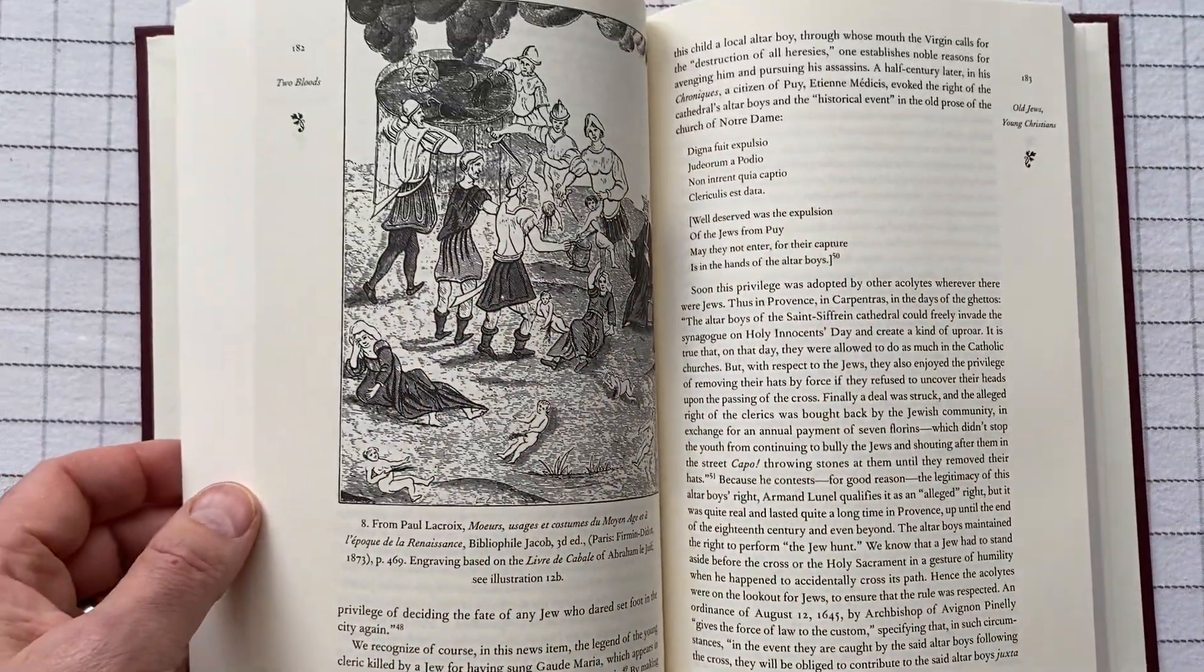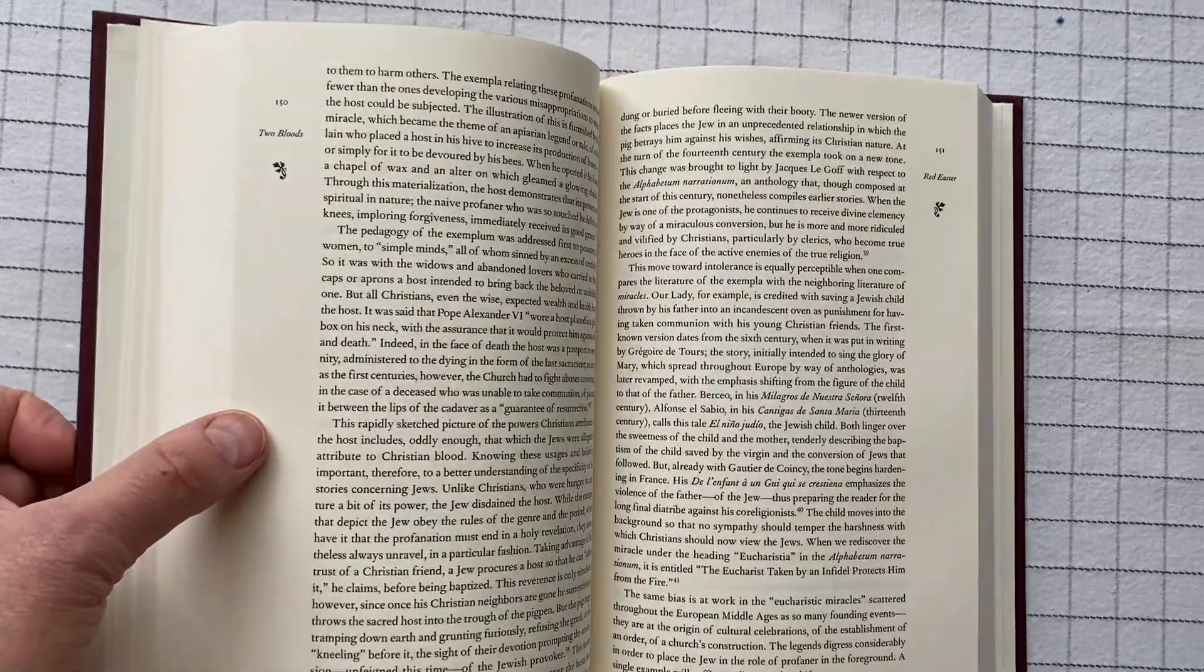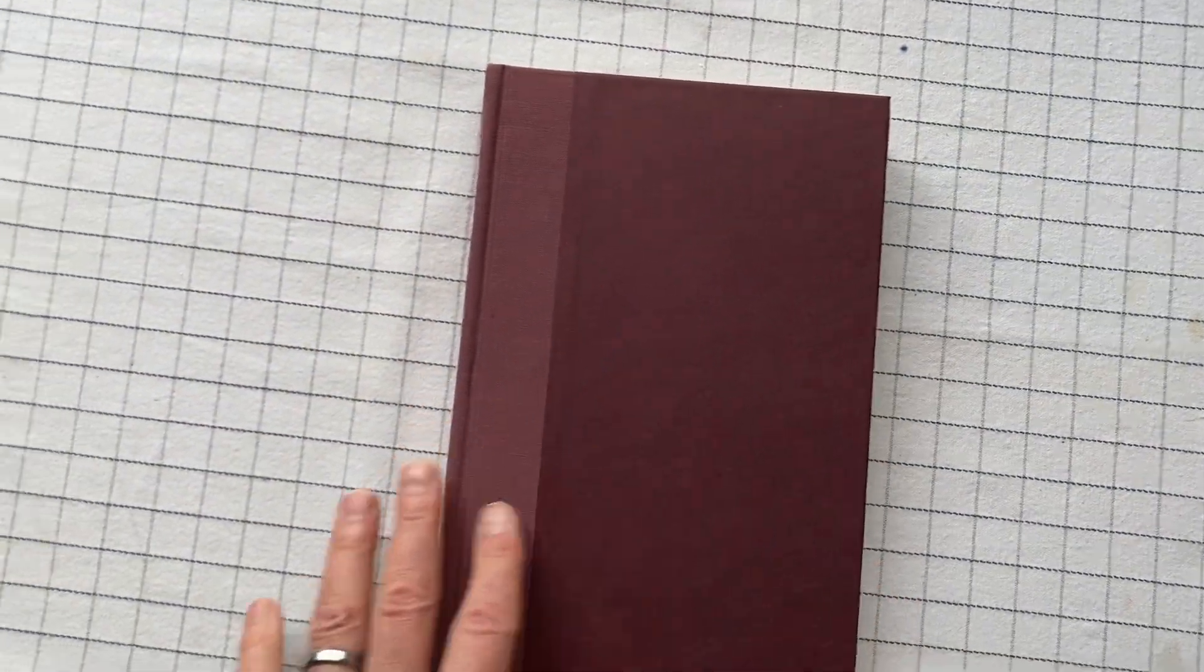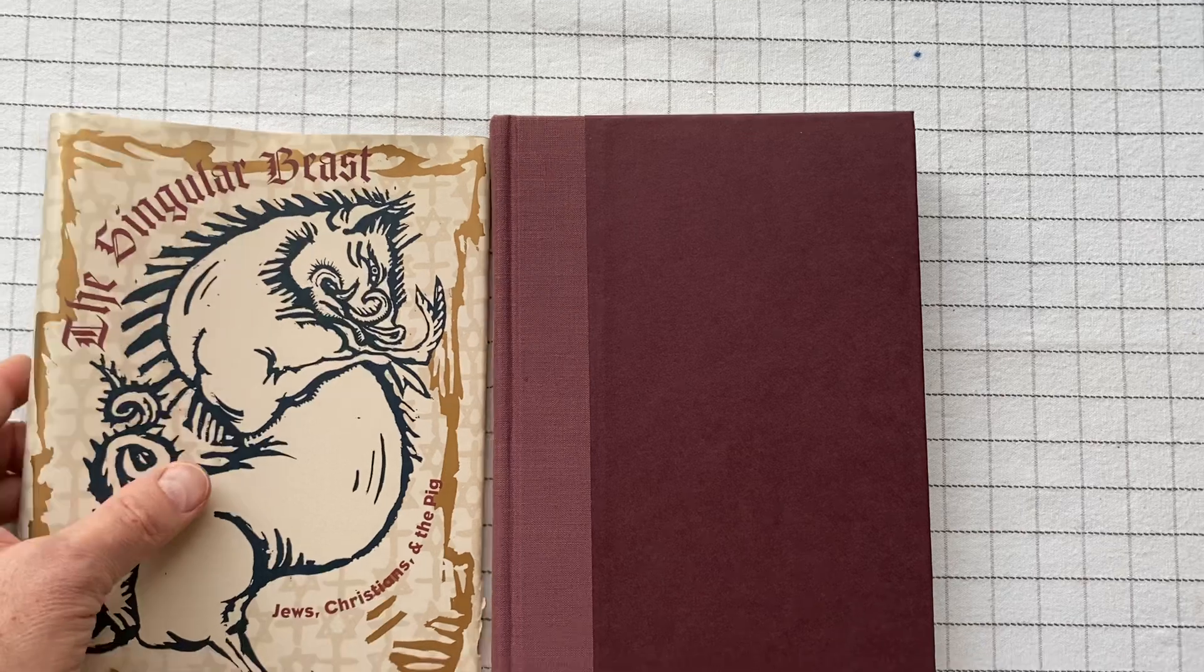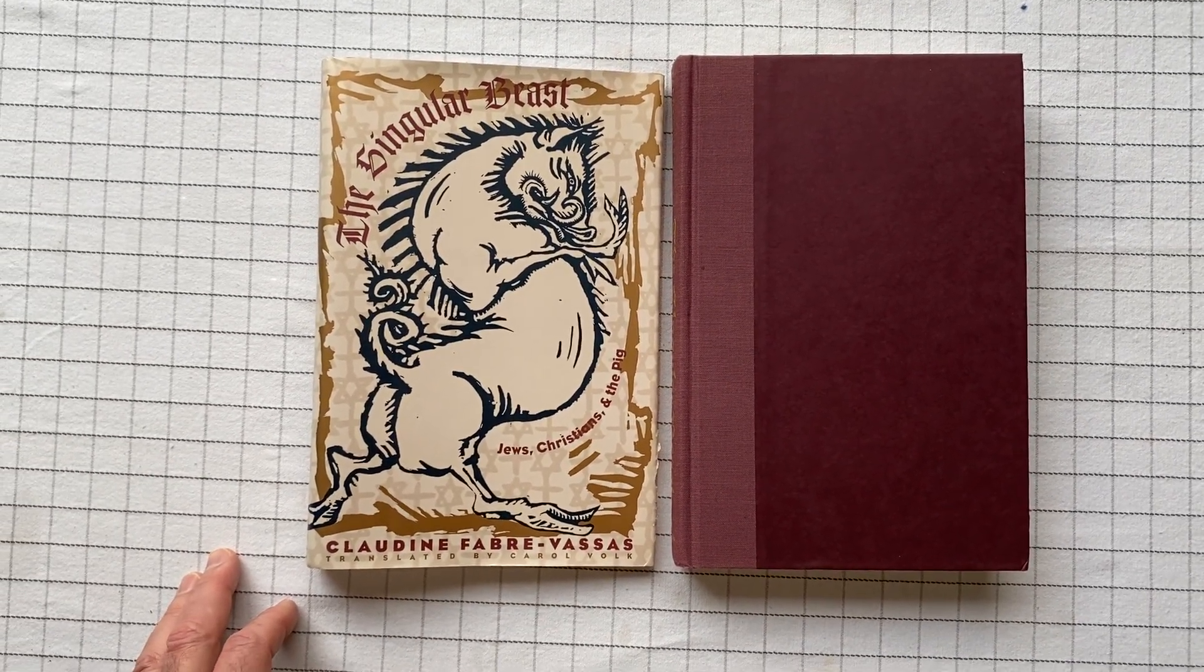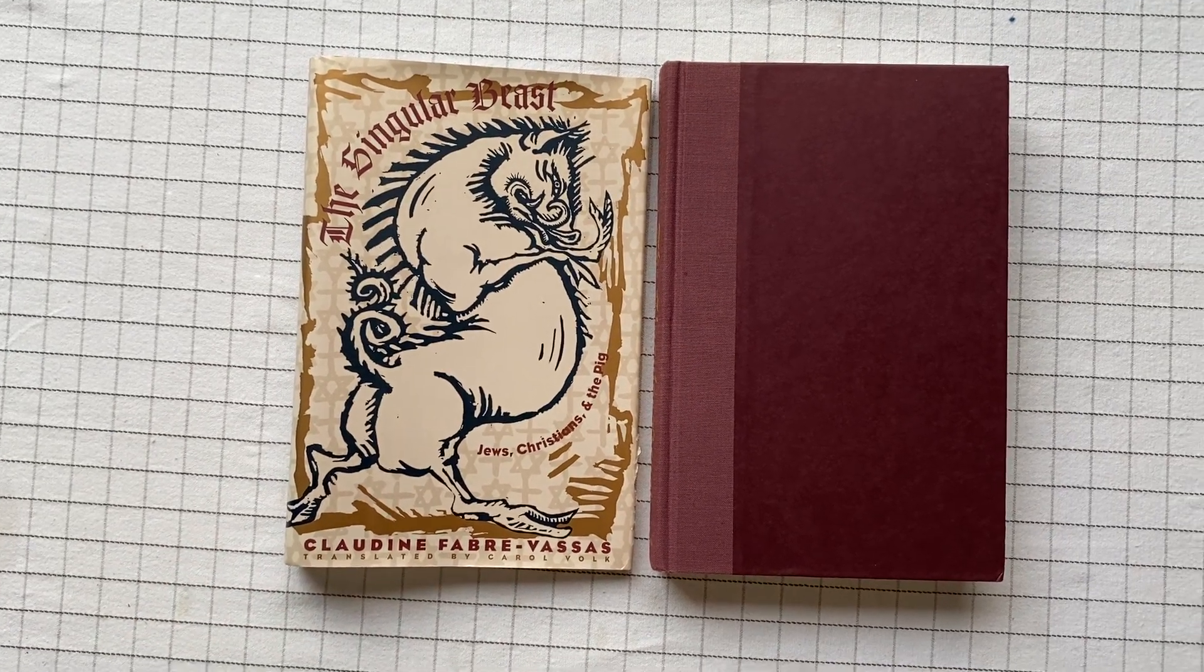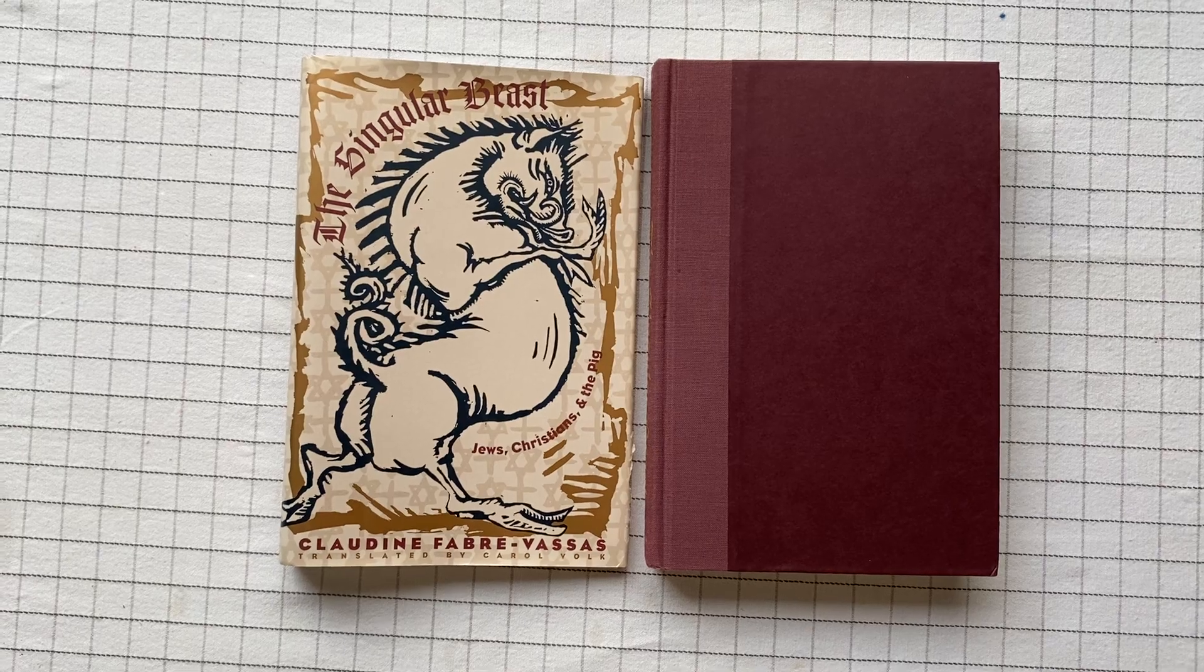I can recommend it if you're at all interested in this kind of history. I found it really super interesting. The Singular Beast by Claudine Fabre-Vassas, translated by Carol Volk. I don't think you're going to find another translation, so this is the only one you get if you don't read French.